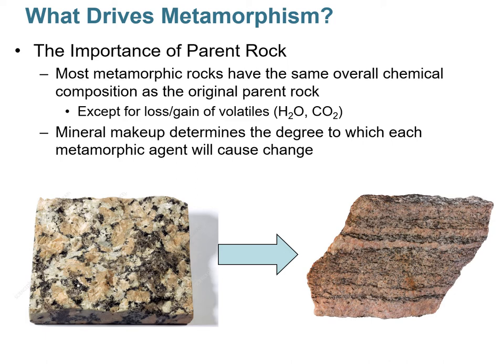Metamorphic rocks typically have the same overall chemical composition as their parent rock. Changes can occur only if chemically active fluids are involved, which can cause a loss or gain of dissolved solids. The mineral makeup of a metamorphic rock tells us which agent was the primary cause. For example, if you find sanidine — a mineral that only forms under very high temperatures — heat was the key factor. If you find a mineral that only forms from hydrothermal solutions, then chemically active fluids were the culprit.